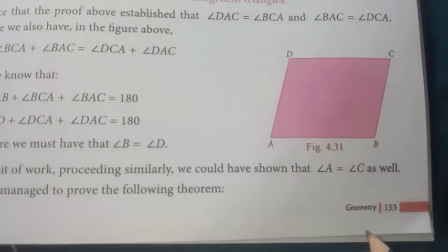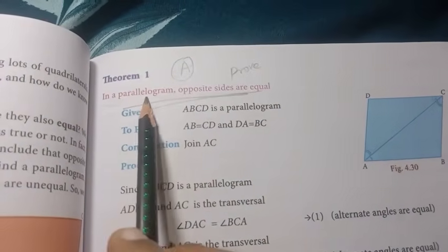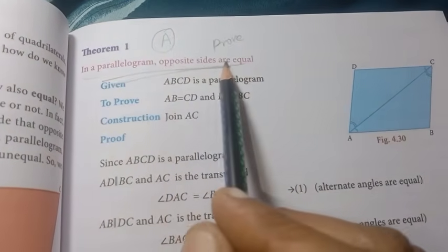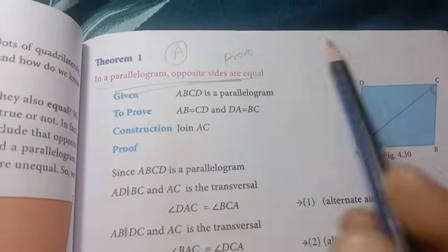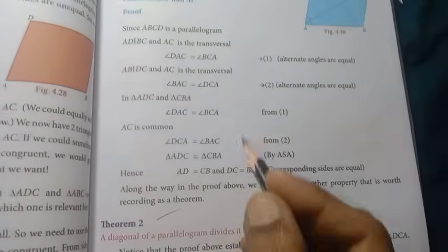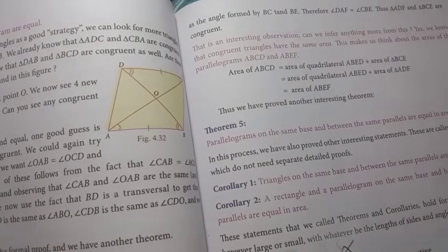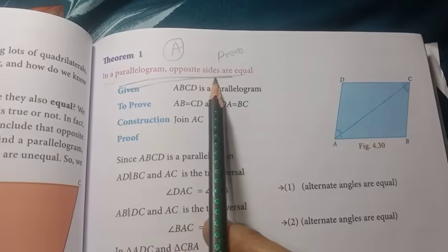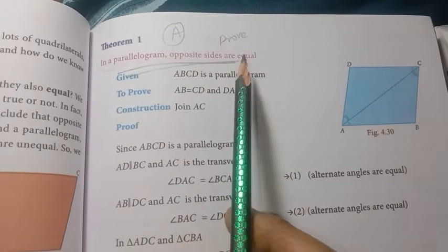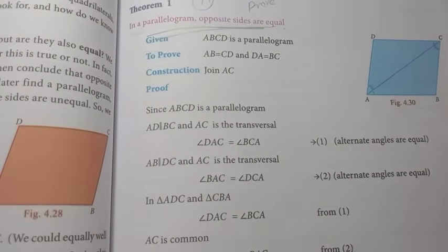At page number 153, there is a previous year annual question — parallelogram opposite sides are equal, prove that. In Theorem 1, prepare the full theorem. Theorem 1 and Theorem 2 are there. These maximum Theorem 1 and 2 appear most often. Because it is a previous year annual exam question, study these theorems well. Theorems 1 and 2 are important.